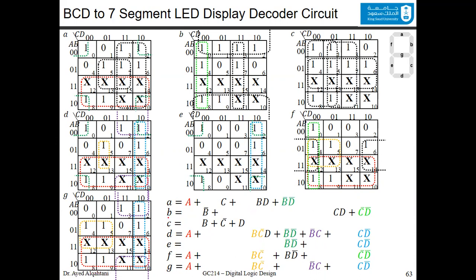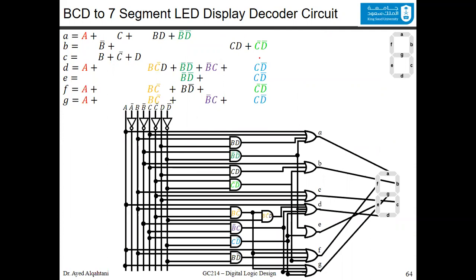After you get all the functions based on the Karnaugh map simplifications, now you can draw the logic diagram. Before we go there, you see the common terms are shown in colors between the different segment functions. For example, the light blue one, C D bar, is actually shown here in D, in E, and also in G. Now we rewrite those functions here, and based on these functions, we draw the block diagram.